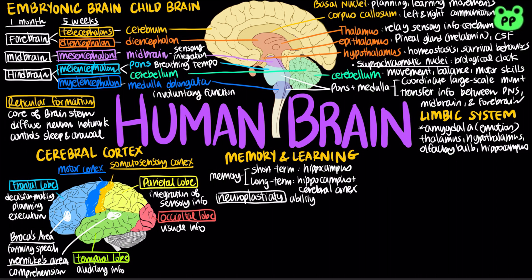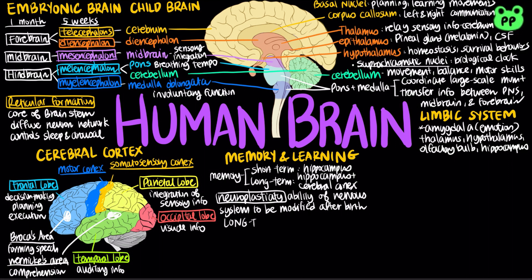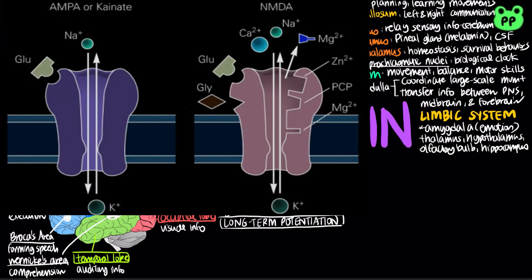Neuroplasticity describes the ability of the nervous system to be modified after birth. Changes can either strengthen or weaken signaling at a synapse. Long-term potentiation, or LTP, refers to a lasting increase in the strength of synaptic transmission. LTP involves two types of glutamate receptors, each named for a molecule — NMDA or AMPA — that can be used to artificially activate that particular receptor.